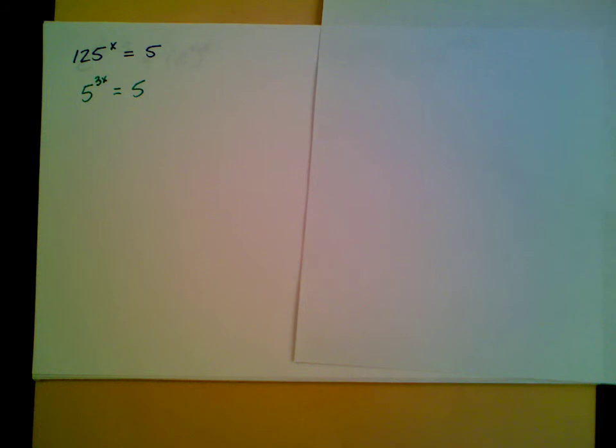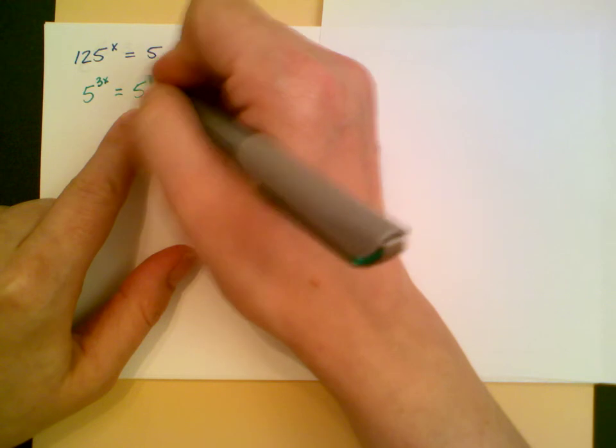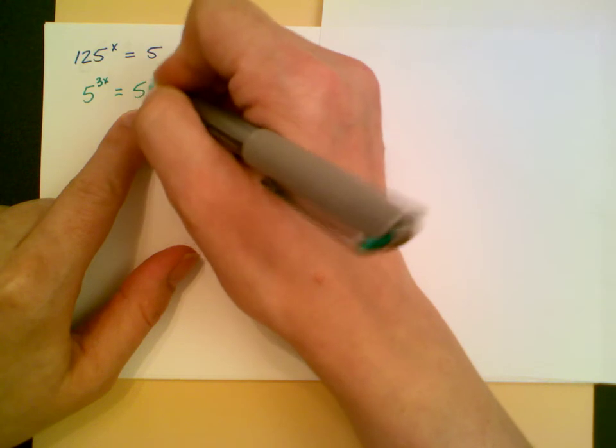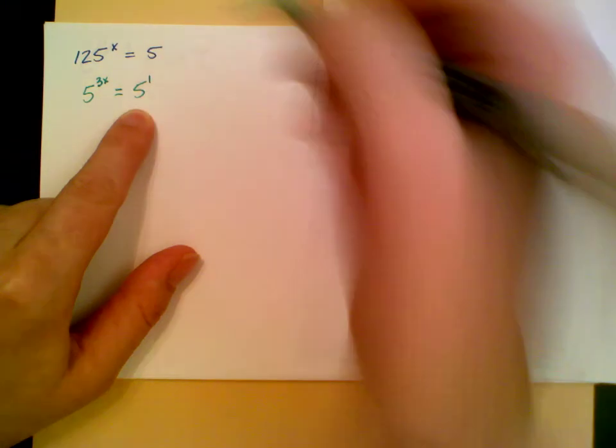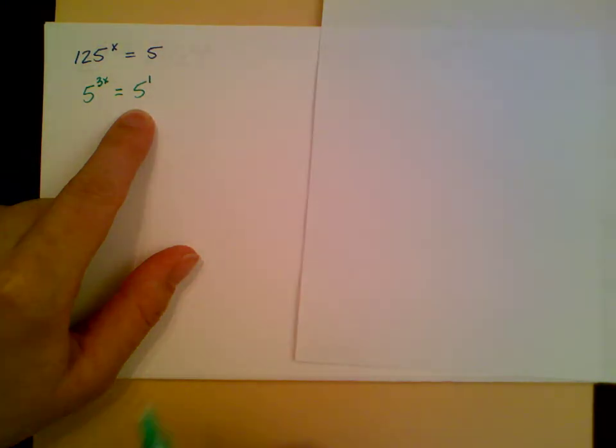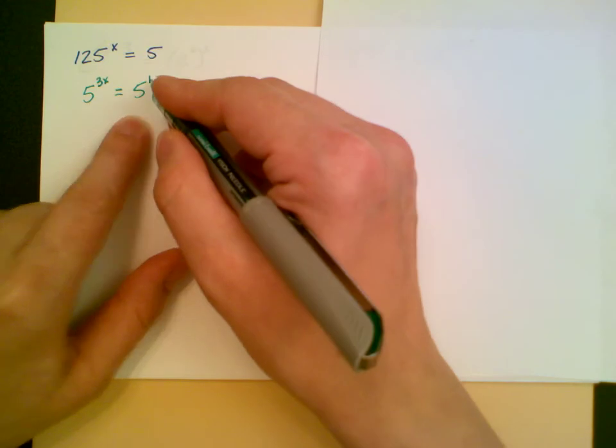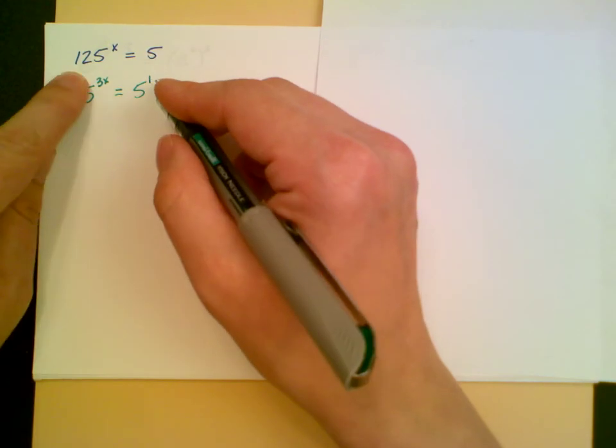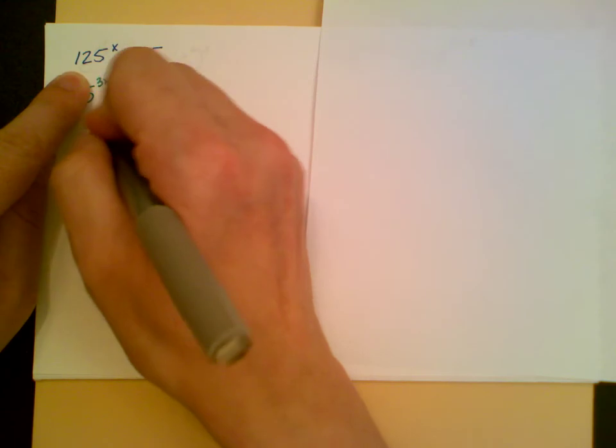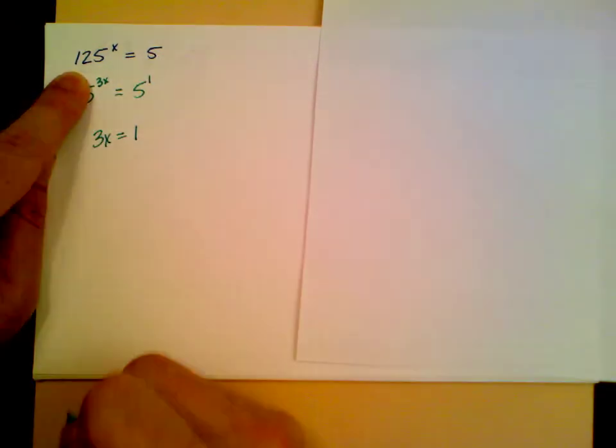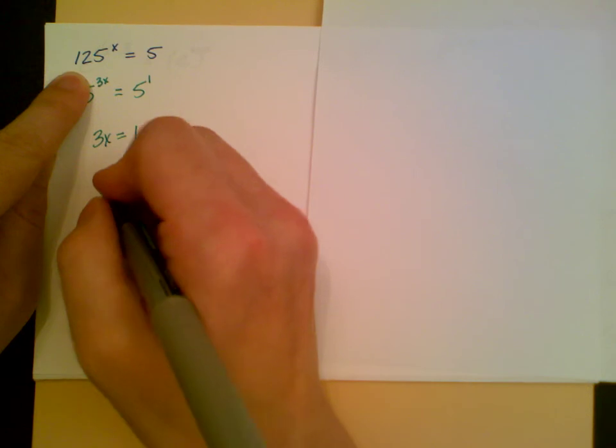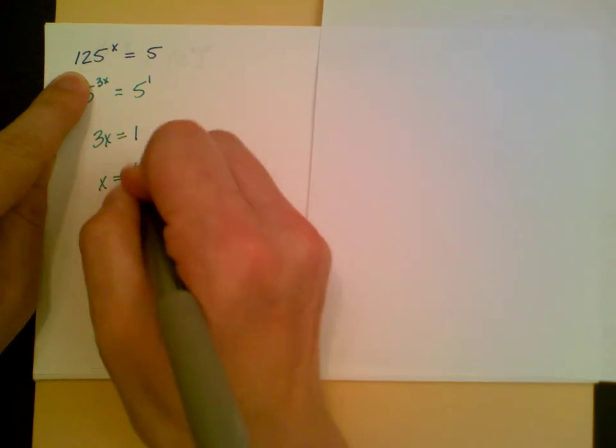Notice I don't have an explicit exponent written, but any time I just have a number, I can always write that as 5 to the 1, in order to have an explicit exponent that I can now set equal to the 3x. So I get 3x equals 1, and so x is equal to 1 third.